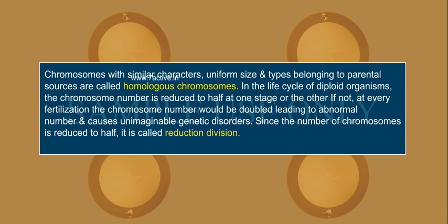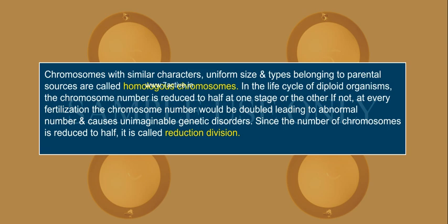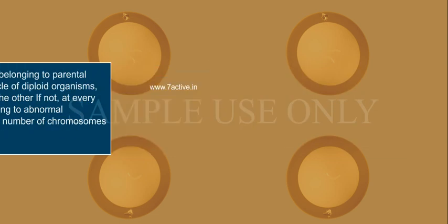In the life cycle of diploid organisms, the chromosome number is reduced to half at one stage or another. If not, at every fertilization the chromosome number would be doubled, leading to an abnormal number and causing unimaginable genetic disorders. Since the number of chromosomes is reduced to half, it is called reduction division.